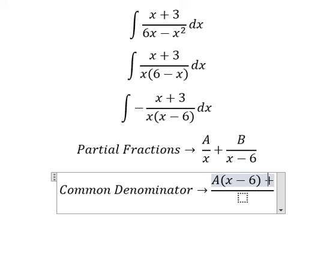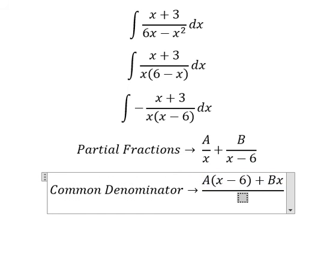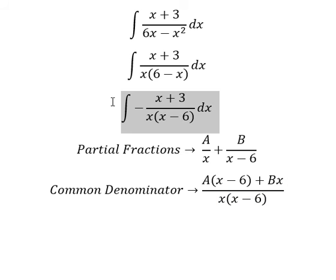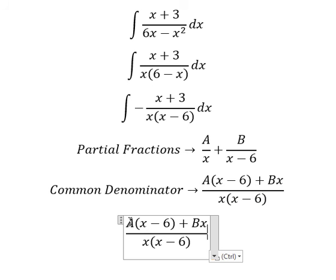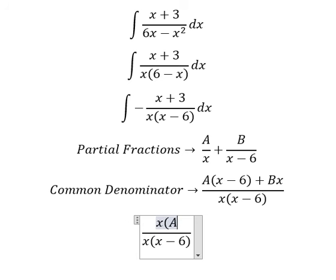So I multiply by x minus 6, B multiplied by x. This one we need to arrange based on the term of x. About x we have A plus B because A multiplied by x, B with x.